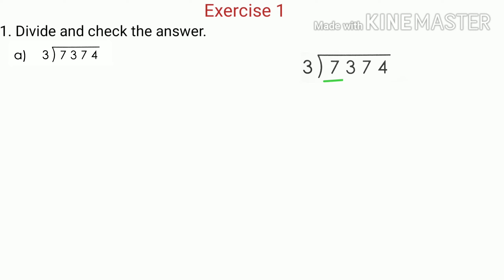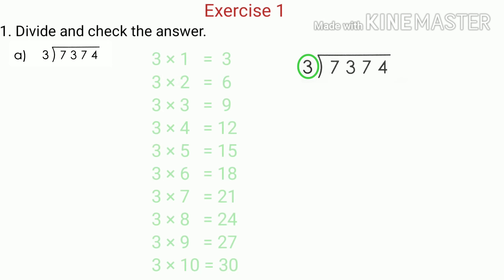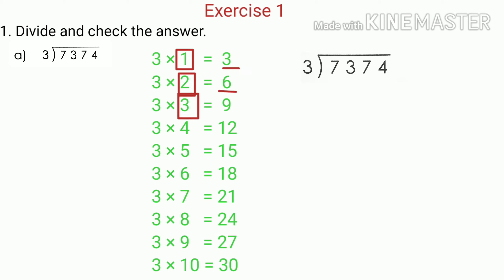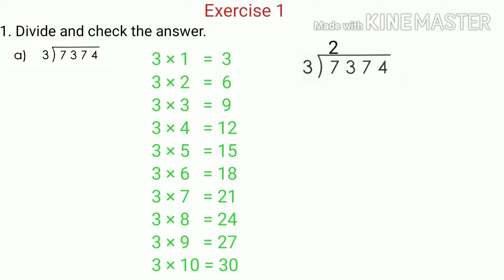Here the leftmost digit is 7, and 7 is greater than 3. So the next step is to divide 7 by 3 — that means we have to find how many times of 3 will be equal to or nearest to 7. Looking at the multiplication table of 3: 1 times 3 is 3, 2 times 3 is 6, and 3 times 3 is 9. Since 9 is more than 7, 6 is closest to 7. So we consider 2 times 3, which equals 6, and write 2 as the quotient above 7. Since 3 multiplied by 2 is 6, we write 6 below 7 and subtract. 7 minus 6 gives us 1.